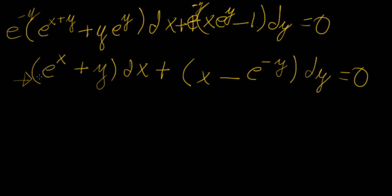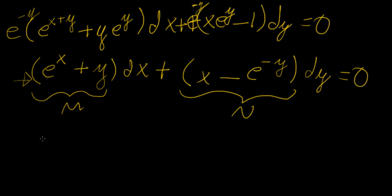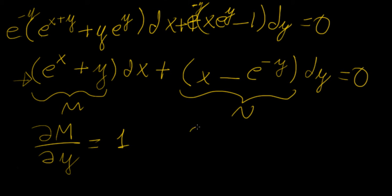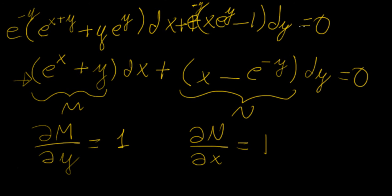Is this differential equation exact? Let's call the first part M and the second part N. The partial derivative of M with respect to y gives us 1. The partial derivative of N with respect to x also gives us 1. So this differential equation is now exact. You might think — is it still the same differential equation? Yes, because all we did was multiply by a factor, which is completely acceptable algebraic manipulation.